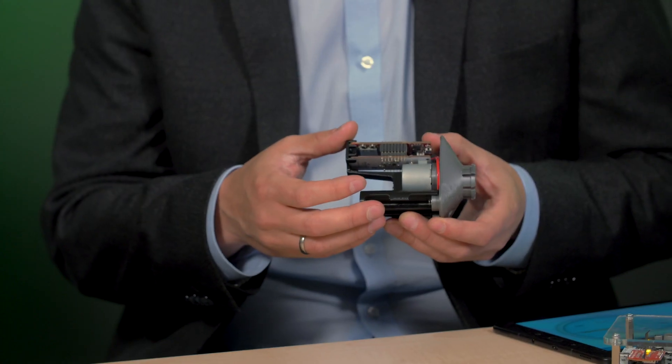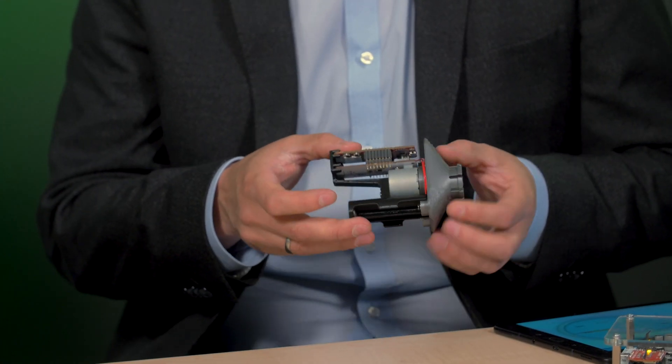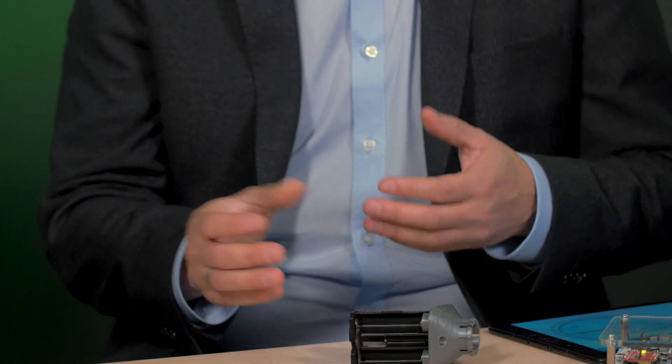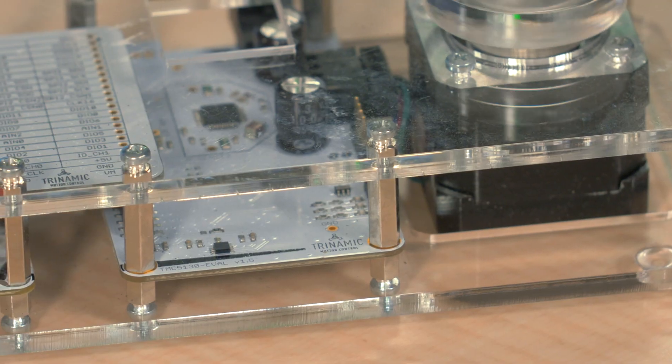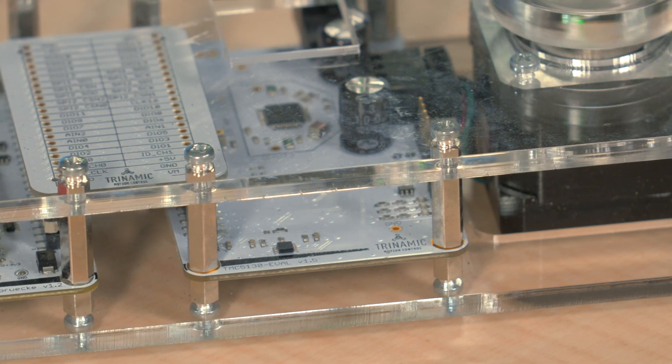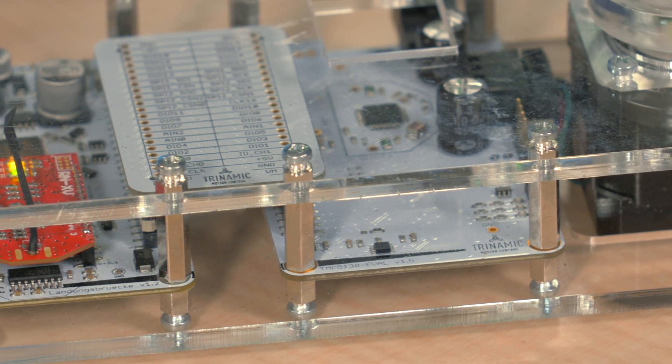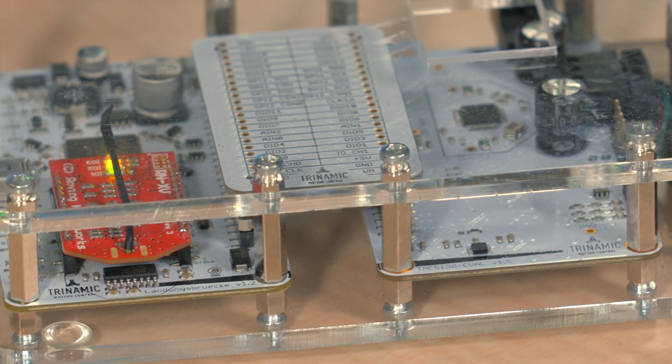But imagine you have a much smaller motor and it's not controlled all of the time or not driven all of the time. For example, like IoT devices, we see a lot of home automation coming up now. This, for example, is a radiator valve for the heating of your home. These motors are driven just a few seconds per day, maybe a few minutes per day.